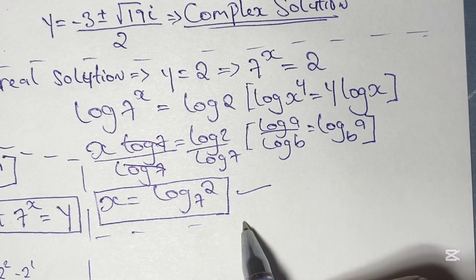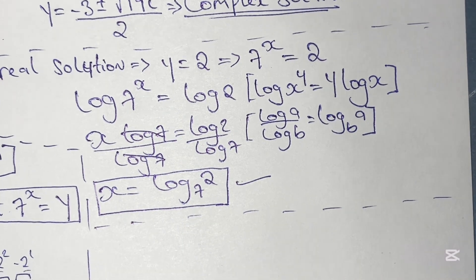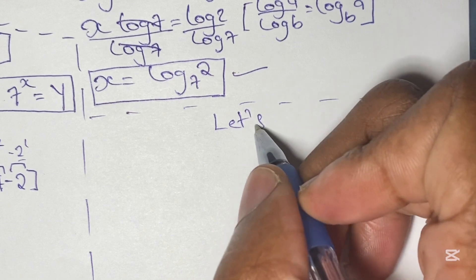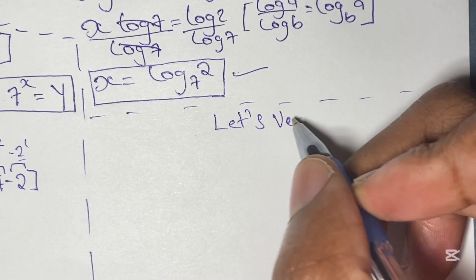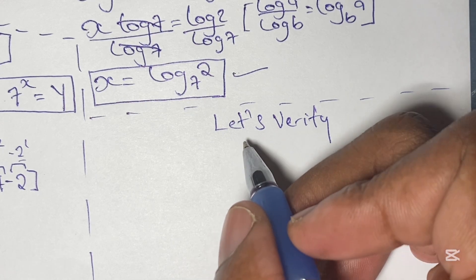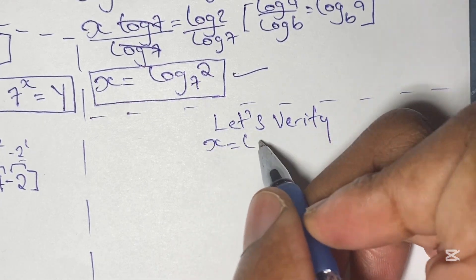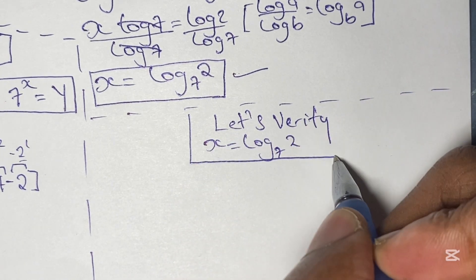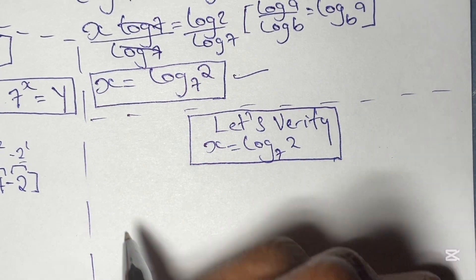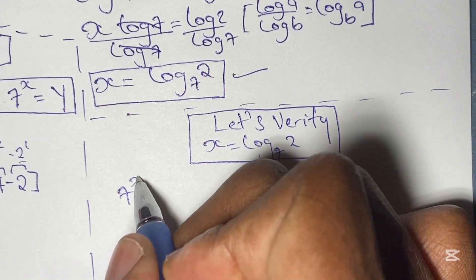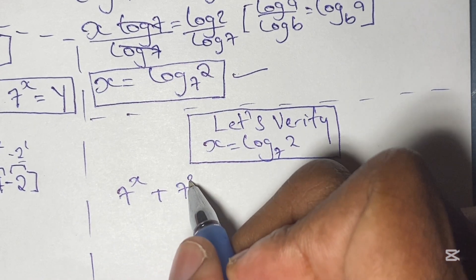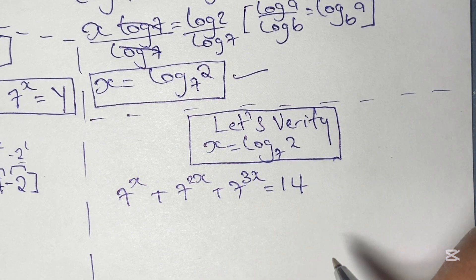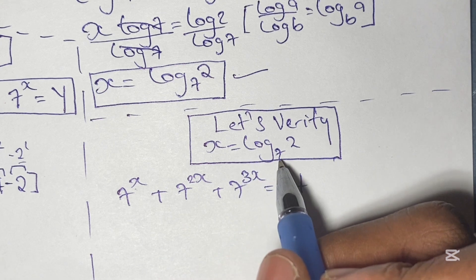Now we verify this solution by plugging x equals log base 7 of 2 back into our original equation: 7 to the power of x, plus 7 to the power of 2 times x, plus 7 to the power of 3 times x, equals 14. We substitute x for the value log base 7 of 2.